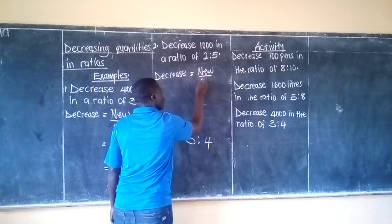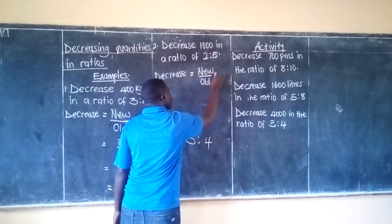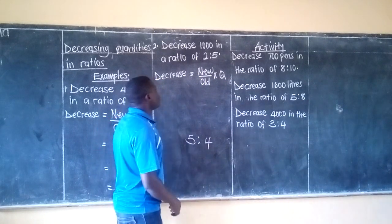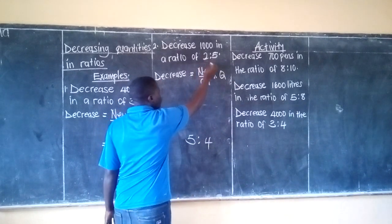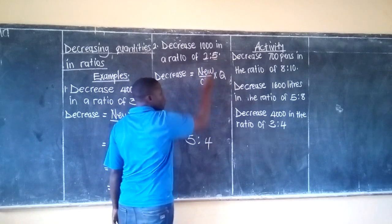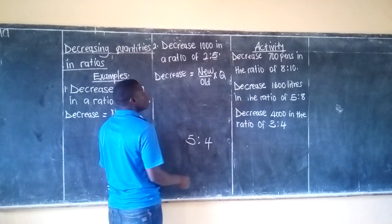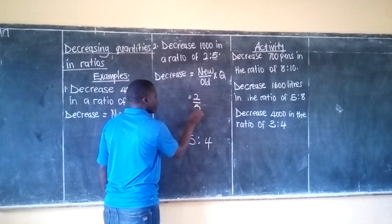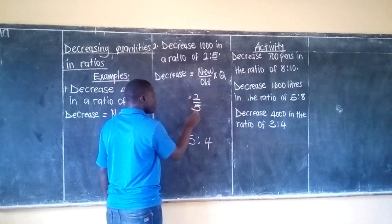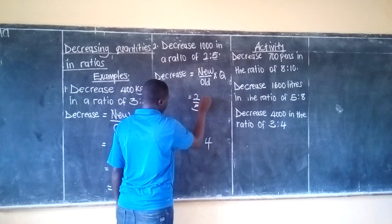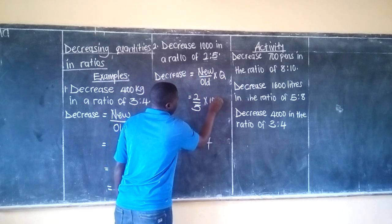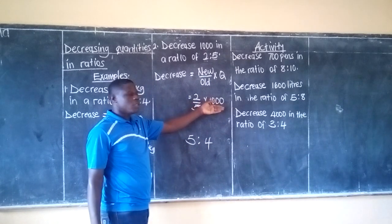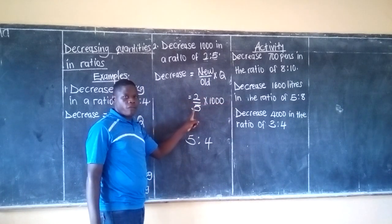Still here, decrease is equal to new out of old. We shall use the quantity or amount. The new part of the ratio is 2 and the old part is 5. So we shall have 2 out of 5, then multiply this by 1,000.